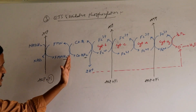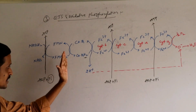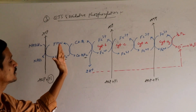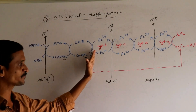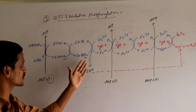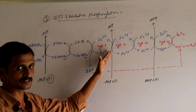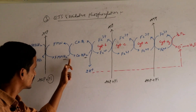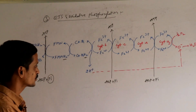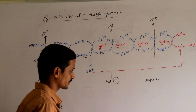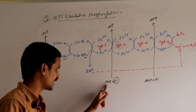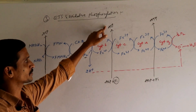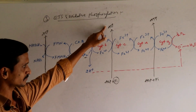If the energy released is not sufficient to form inorganic phosphate, it will be added to the next step. The amounts of energy released across multiple steps together lead to the formation of inorganic phosphate, which is taken by ADP and leads to the formation of ATP.